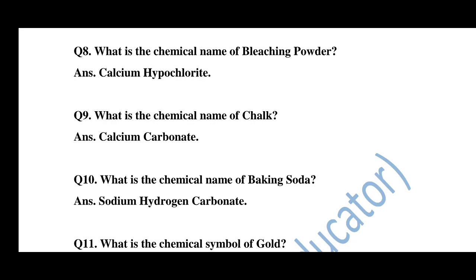Question number 8: What is the chemical name of bleaching powder? Answer: Calcium hypochlorite. Question number 9: What is the chemical name of zinc chalk? Answer: Calcium carbonate. Question number 10: What is the chemical name of baking soda? Answer: Sodium hydrogen carbonate.